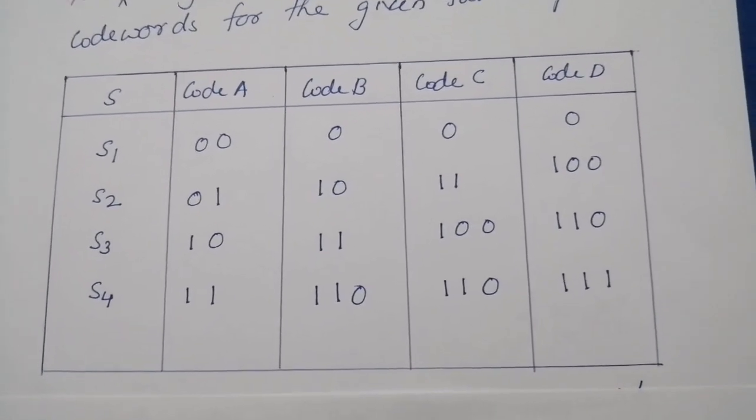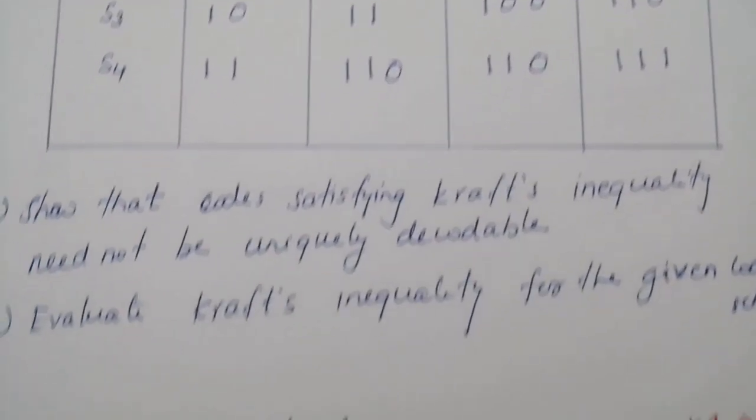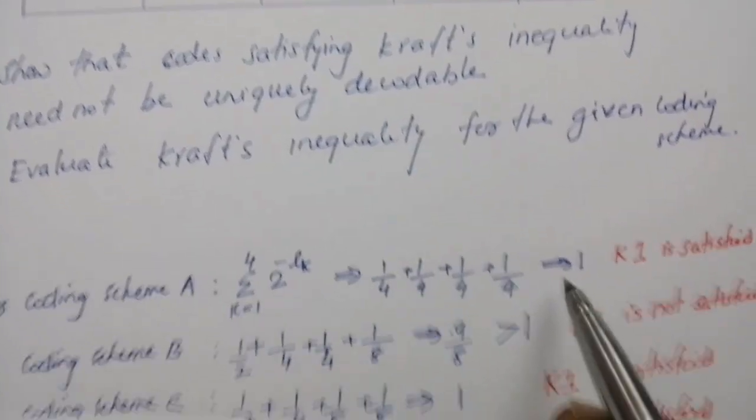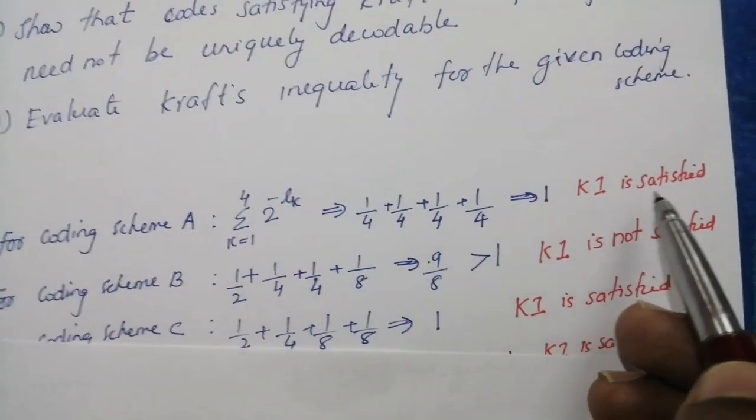So if we evaluate Kraft's inequality, we can see that for coding scheme A, you will get it as 1. So Kraft's inequality is satisfied.